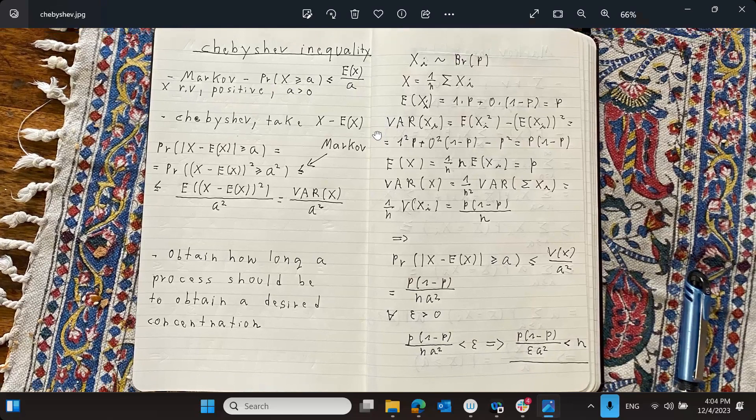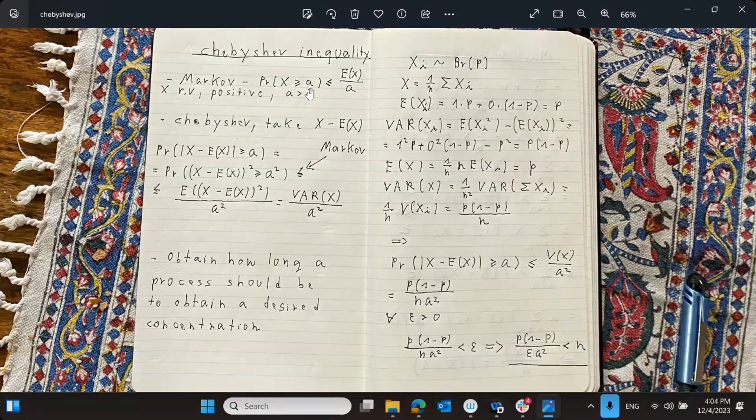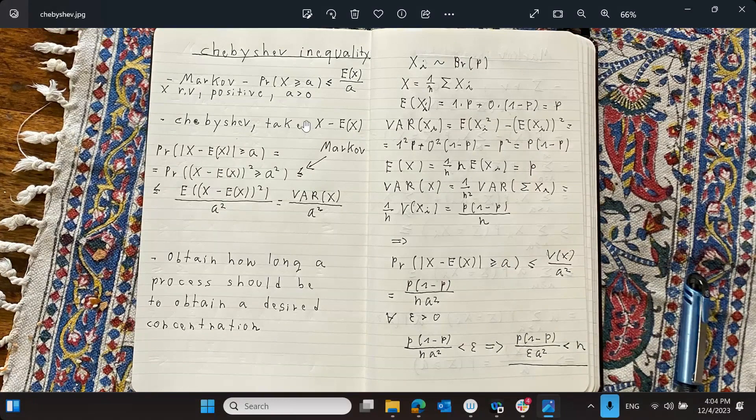So what is the Chebyshev inequality? It's just an application of the Markov inequality to the variable X minus the average. So if we take the absolute value of the variable that we started with minus the average, now we're not assuming that it's positive. But because we're taking the absolute value, this is positive. We're asking what's the probability of the random variable being far away from the average, more than some number. And this is exactly the same as the probability that the square is greater than the square of A.